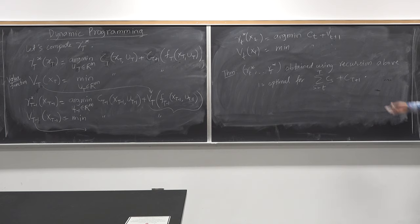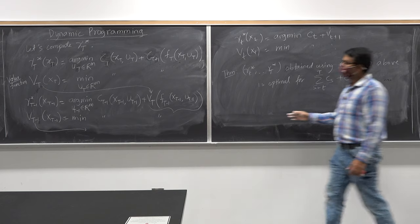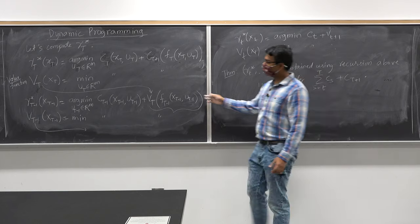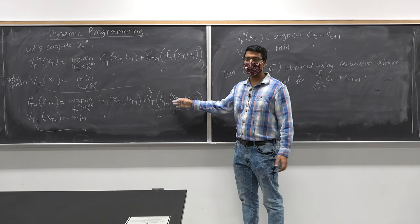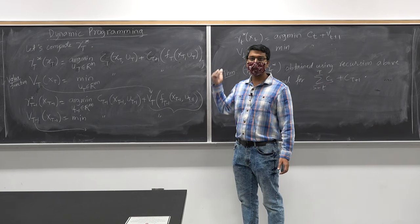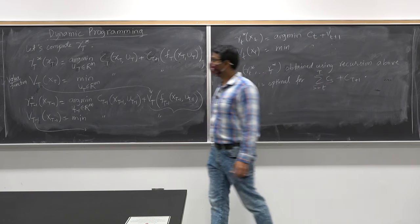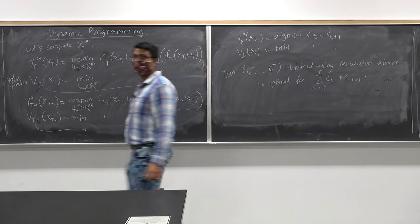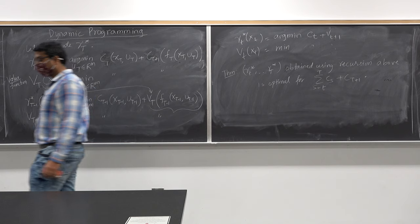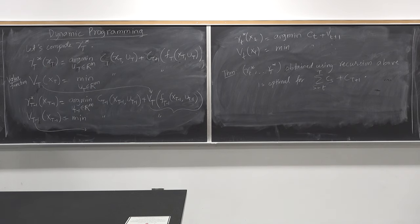One thing obvious from these expressions is that dynamic programming computes a closed-loop or optimal feedback policy, in comparison to the PMP approach which computes the optimal open-loop policy — computing u*_1 through u*_T — whereas dynamic programming computes γ*_1 through γ*_T.